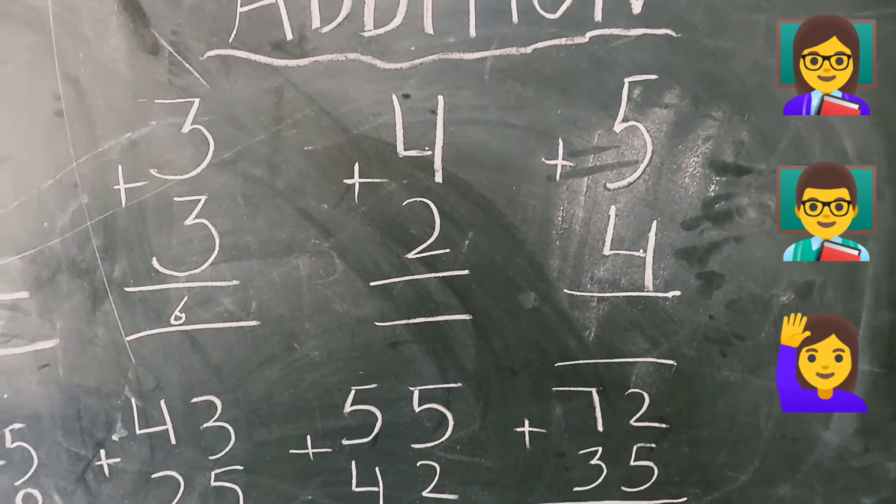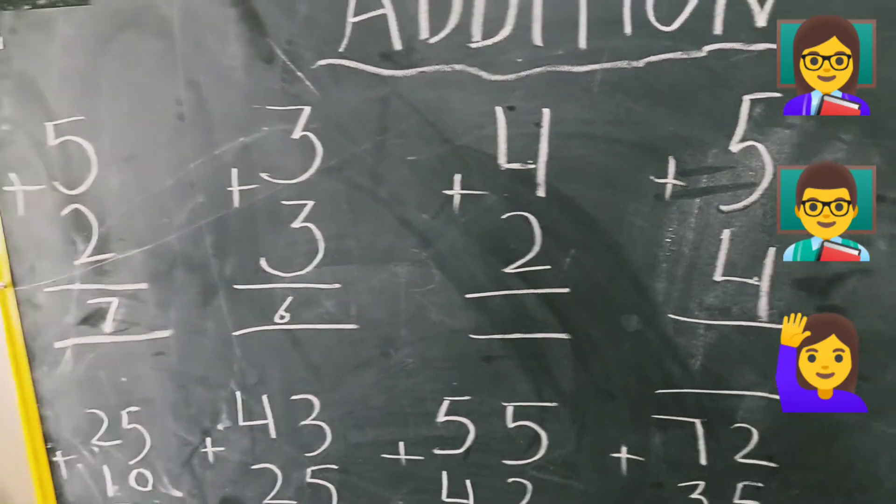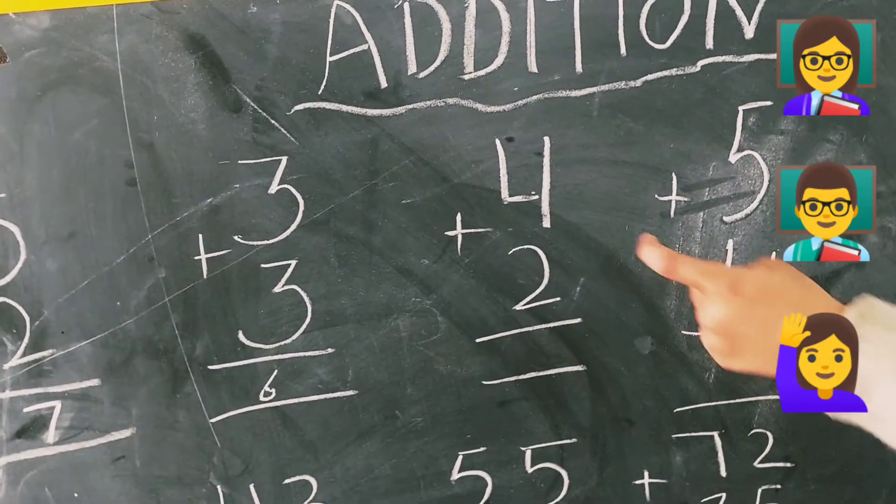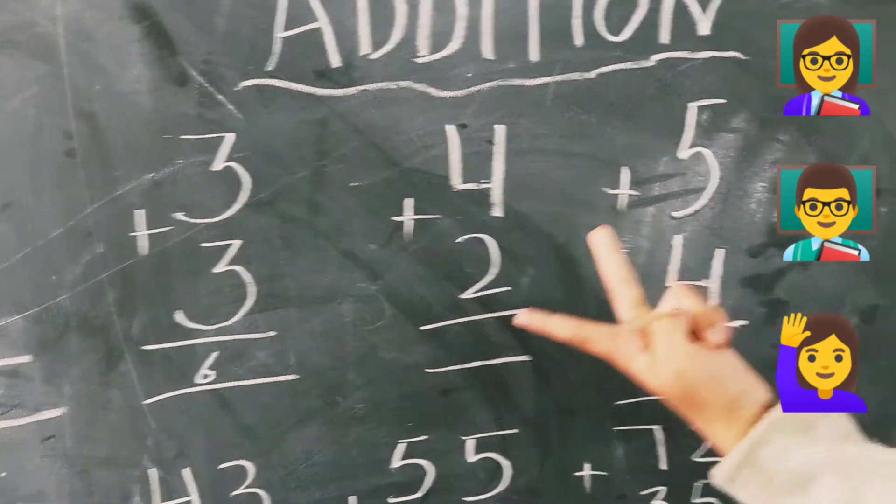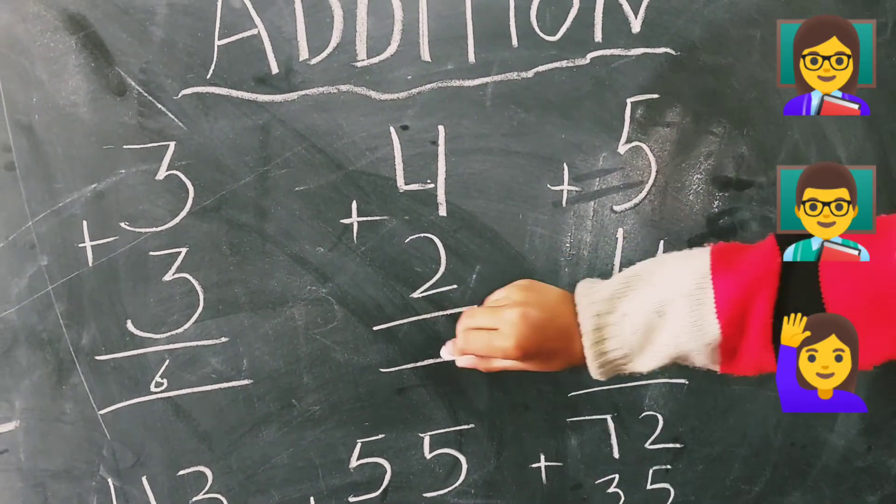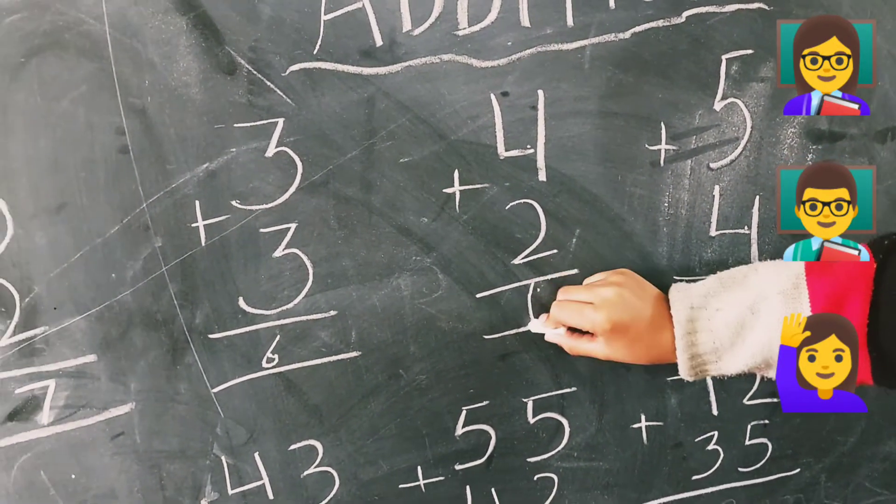Next is four plus two. Four in your mind, two in your fingers, five, six. So, answer is six.